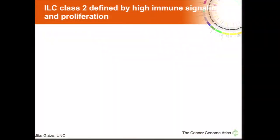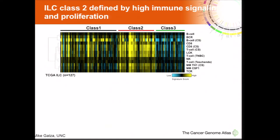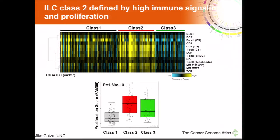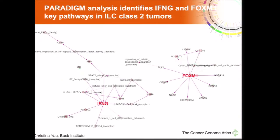For class 2, two-class SAM analysis identified many dysregulated genes related to immune signaling. We ran gene expression signatures measuring B-cell, T-cell, macrophage, and other immune signaling and found significant upregulation of these signatures in class 2 compared to the other two classes. We also see increased proliferation as measured by a PAM50 gene expression signature in class 2, and both features can be reproduced in the independent METABRIC dataset. This restricts the immune-related signaling previously observed in lobular tumors specifically to class 2 tumors. PARADIGM analysis confirmed upregulation of interferon gamma signaling and increased FOXM1 signaling related to high proliferation.